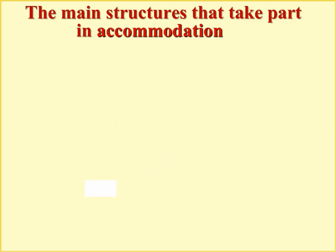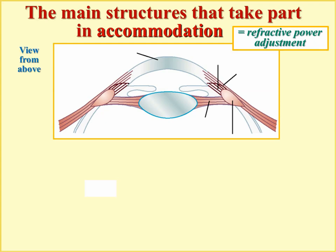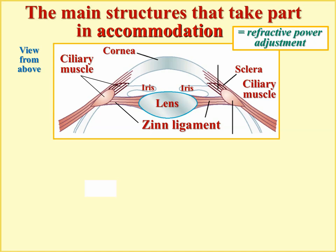Accommodation is the change in regulation of refractive power — the refractive power of the lens, and therefore of the total optic system of the eye, is adjusted to the distance to the object, because object distance is variable while the distance from lens to retina is always constant. The lens is suspended within its capsule by the suspensory ligament (zonular fibers). The active structure that can change the stretch of the ligament — and thus the shape of the lens — is the ciliary muscle, which consists of two types of fibers: circular fibers forming a ring, and meridional fibers.